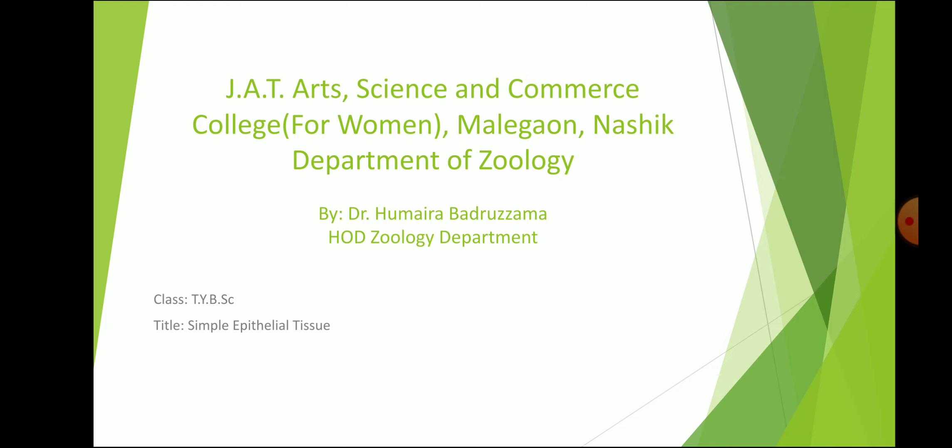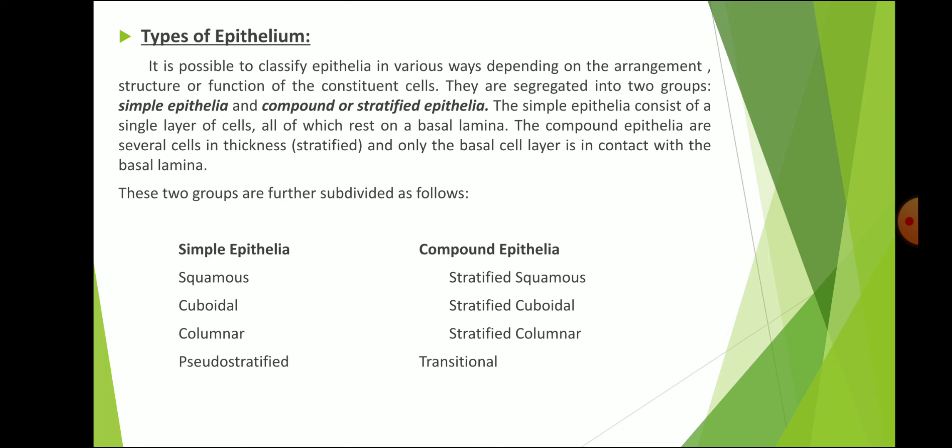To replace lost cells, active cell division occurs in the epithelium. The epithelium itself is of two types: simple epithelium and compound epithelium. It is possible to classify epithelia in various ways depending on the arrangement, structure, and function of constituent cells. They are segregated into two groups: simple epithelium and compound or stratified epithelium.